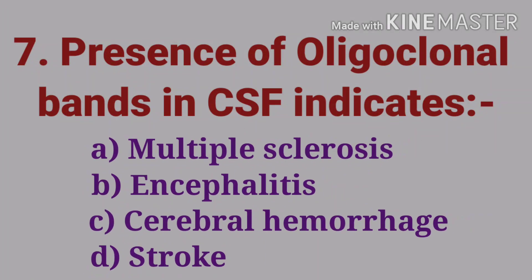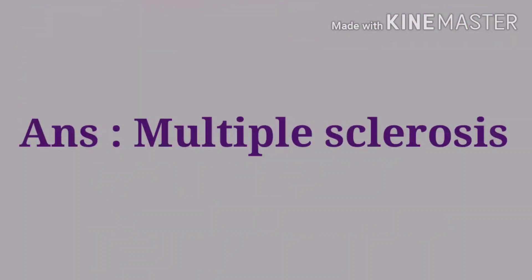The seventh question: presence of oligoclonal bands in the CSF indicates — options are multiple sclerosis, encephalitis, cerebral hemorrhage, and stroke. The answer is multiple sclerosis. Oligoclonal bands are seen in multiple sclerosis.